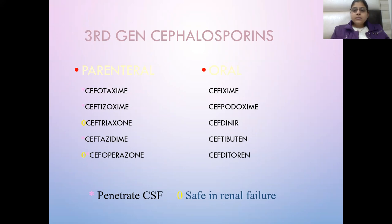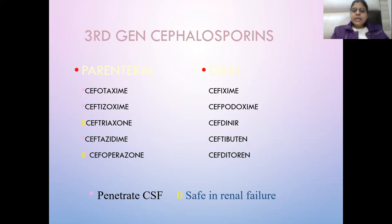Third generation parenteral drugs are Cefotaxime, Ceftizoxime, Ceftriaxone, Ceftazidime, and Cefoperazone. Oral drugs are Cefixime, Cefpodoxime, Cefdinir, Ceftibuten, and Cefditoren. Third generation drugs penetrate the CSF and are safe in renal failure because they are secreted in the bile and excreted in the feces — they are not excreted through the kidneys.